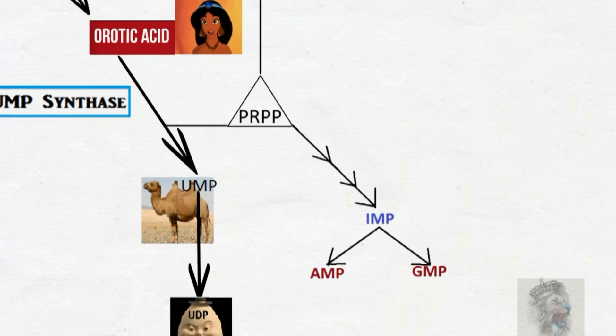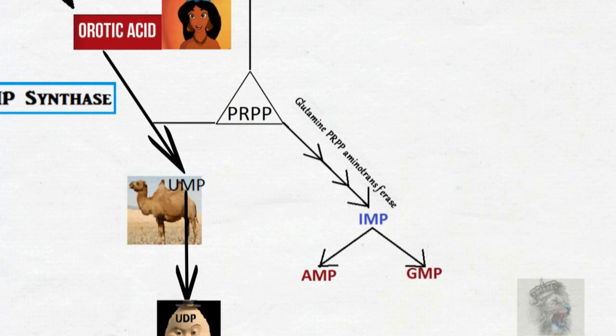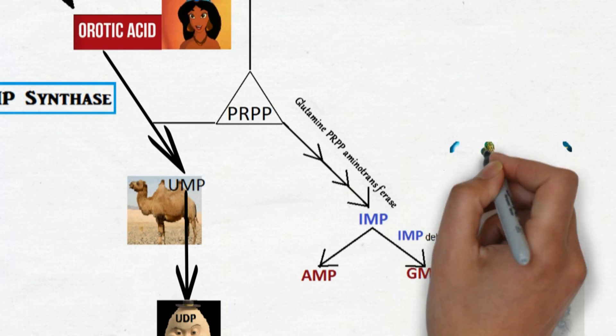PRPP amidotransferase turns into inosine monophosphate, which is IMP. Finally, IMP produces AMP and GMP, and GMP utilizes IMP dehydrogenase for its production.